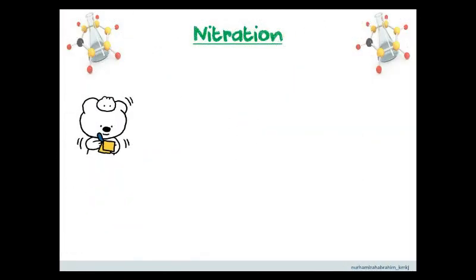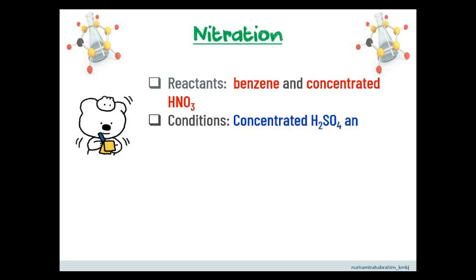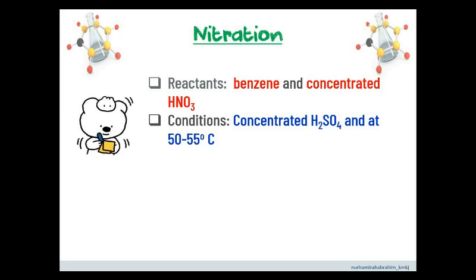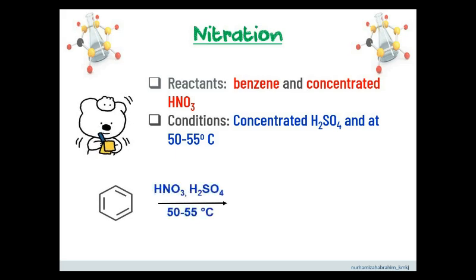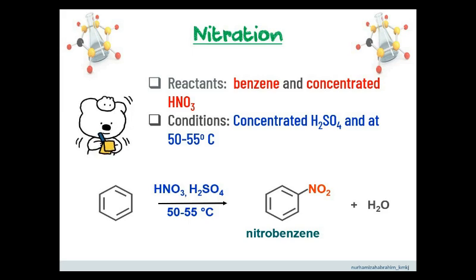The next reaction of benzene is nitration. The reactant needed is concentrated nitric acid, under conditions of concentrated sulfuric acid and at 50 to 55 degrees Celsius. For example, when benzene reacts with concentrated nitric acid in concentrated sulfuric acid at 50 to 55 degrees Celsius, the product formed is nitrobenzene, where one hydrogen from benzene is substituted with a nitro group from nitric acid, with water as a by-product.